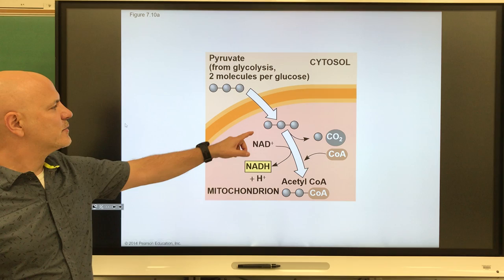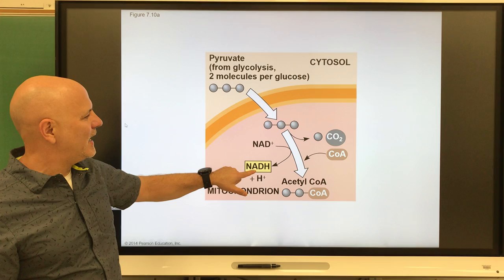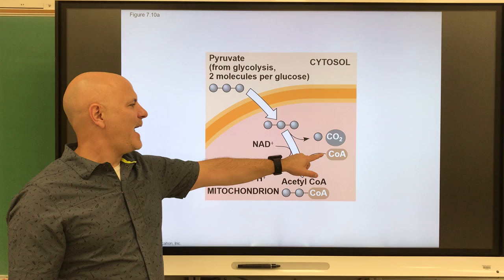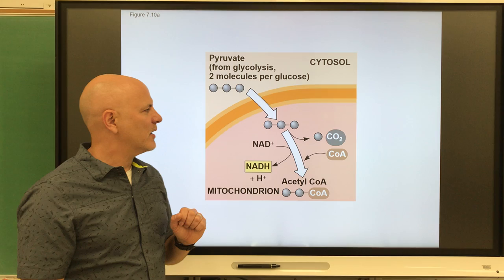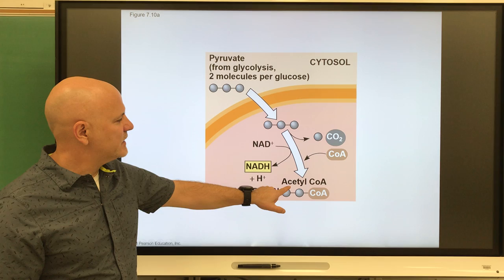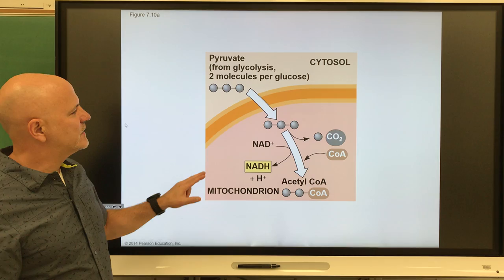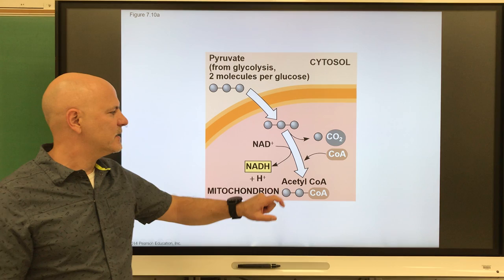In the transition reaction, we take each pyruvate, extract some energy from it making an NADH, lose a carbon dioxide — so one carbon gets removed — and add onto it an enzyme called CoA, resulting in what is known as acetyl CoA. The net result is two NADHs, two carbon dioxides, and two acetyl CoAs — because everything occurred twice since we had two pyruvates.